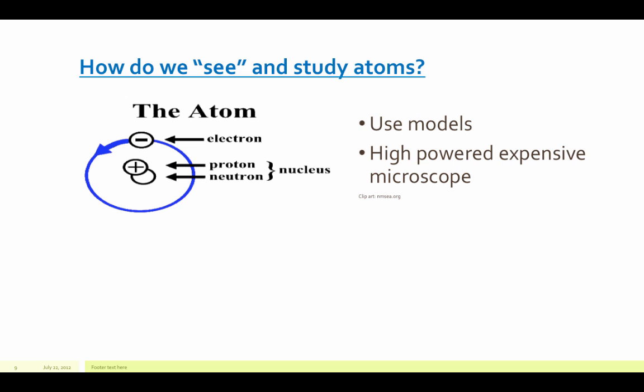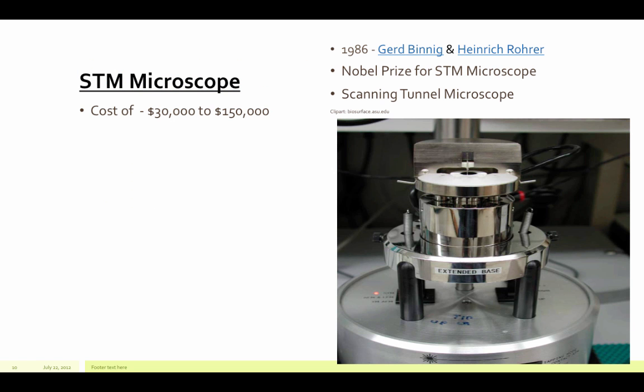How do we see and study atoms? Well, I can't exactly have you bring them into class. We're going to use models instead. Also, when you get to college, maybe you'll use some high-powered expensive microscopes and be able to actually see them. If you actually wanted to see an atom, you would need a microscope that costs anywhere from $30,000 to $150,000. And they are called the STM or scanning tunneled microscope if you were going to look all the way down to an atom.